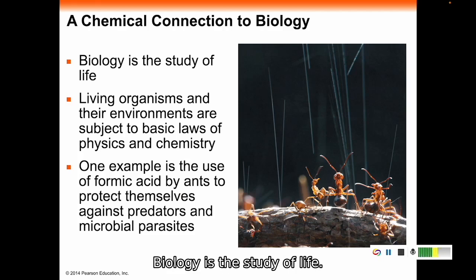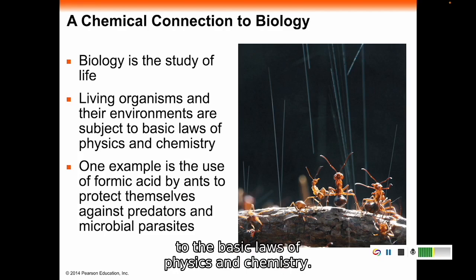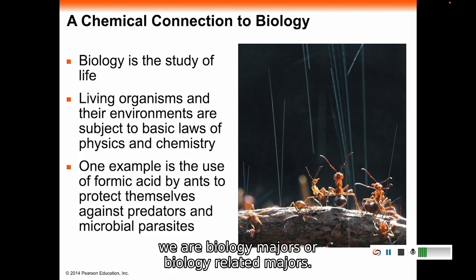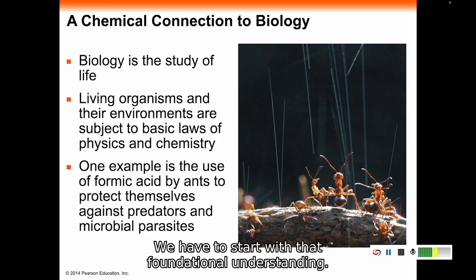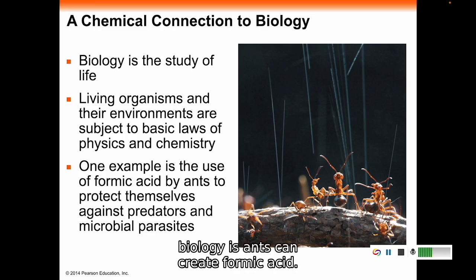Biology is a study of life. Living organisms in their environment are subject to the basic laws of physics and chemistry. We have to start with that foundational understanding. One example of chemistry in biology is ants can create formic acid. This formic acid is used by ants to protect themselves against predators and against microbial parasites.